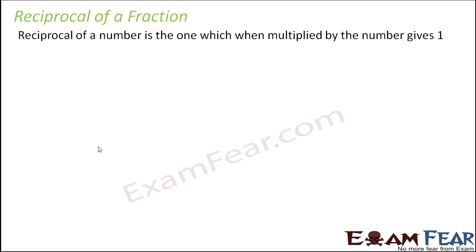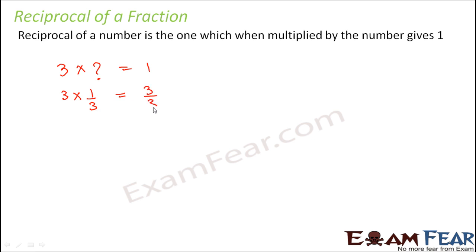The reciprocal of any number is that number which, when multiplied by the original number, gives one. For example, take the number three. What number multiplied by three gives one? That is one-third, because one-third times three equals three-thirds, which equals one. Now, what is the reciprocal of one-third? It is three, because three times one-third also equals one.